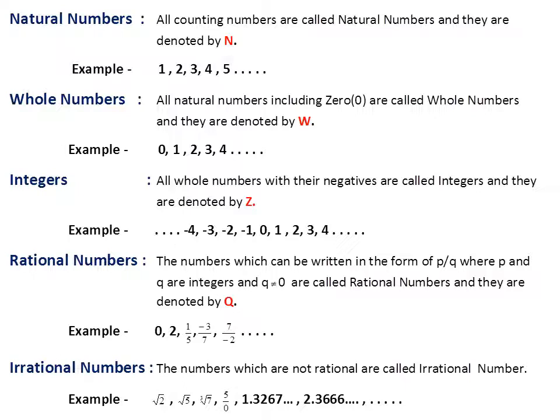Second is whole numbers. All natural numbers including 0 are called whole numbers and they are denoted by capital W. If we add 0 along with all natural numbers, then they all become whole numbers. For example: 0, 1, 2, 3, 4, and so on.